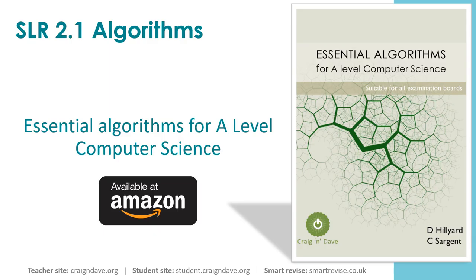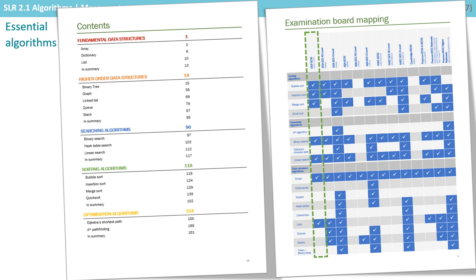We know that algorithms are some of the hardest parts of any computer science specification. So we have written a book called Essential Algorithms for A-level Computer Science, which is available on Amazon. While the title suggests this is only for A-level, you can see from the examination board mapping page that we have chapters which cover every algorithm you're required to know for the GCSE.